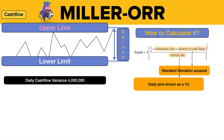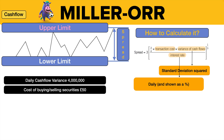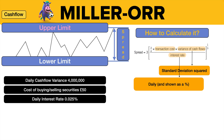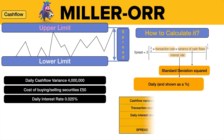Here's a question for us. We have a daily cash flow variance of 4 million. The cost of buying and selling shares — that's the transaction cost of putting money into deposit, taking it out, buying or selling shares — is £50. And the daily interest rate is 0.025%, which as a decimal percentage is 0.00025. That's our interest rate.